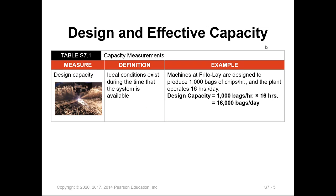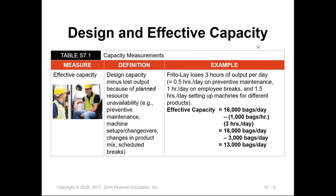This slide shows an example of the design capacity of machines at a Frito-Lay facility. The machines were built to produce 1,000 bags of chips per hour, and the plant operates 16 hours per day. The design capacity equals 1,000 multiplied by 16, which is 16,000 bags expected to be produced per day. Frito-Lay loses 3 hours of output per day: half an hour for preventive maintenance, one hour for employee breaks, and one and a half hours for setting up machines and changing configuration for different products.